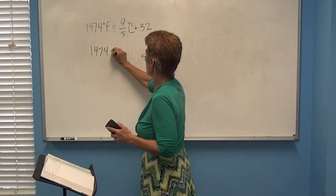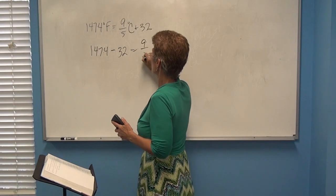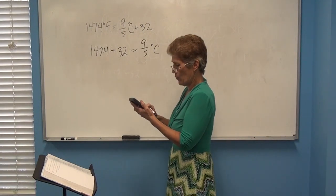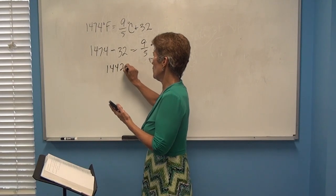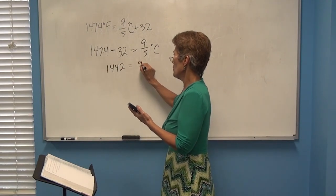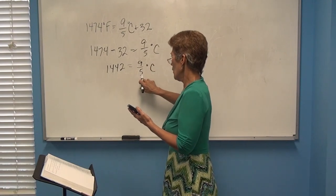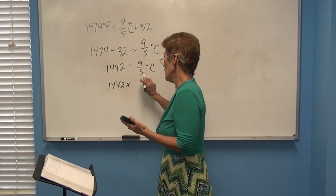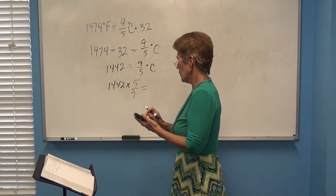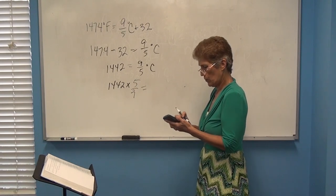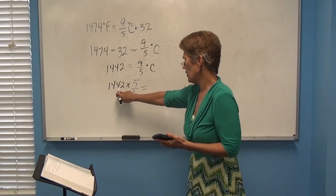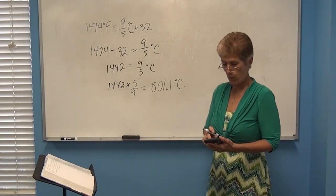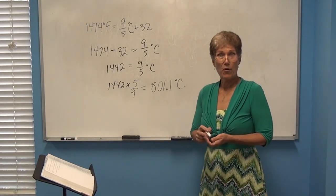1,474 minus 32 equals (9/5)°C. First, 1,474 minus 32, using order of operations, gives 1,442. They're both to the ones place so we're safe. That equals (9/5)°C. Multiply both sides by 5/9 — that's 1,442 times 5, divided by 9. I need four significant figures, so my answer is 801.1 degrees Celsius. I always struggle with order of operations, but just keep working at it.